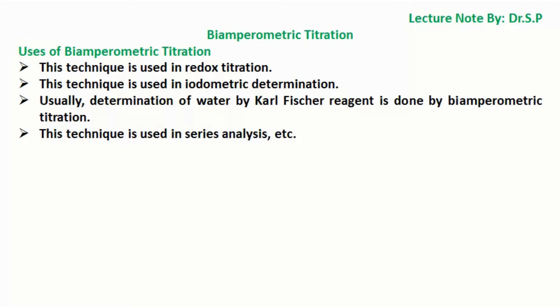Uses of bi-amperometric titration. This technique is used in redox titration. This technique is also used in iodometric determination. Usually, determination of water by Karl Fischer reagent is done by bi-amperometric titration. And this technique is used in series analysis, etc.